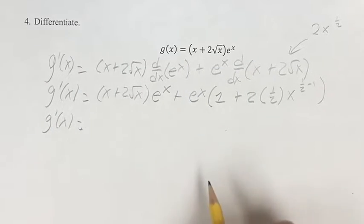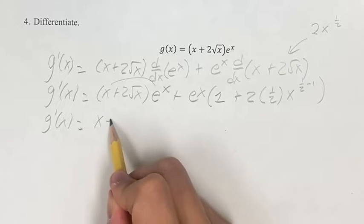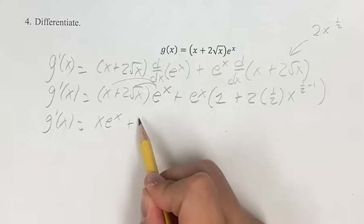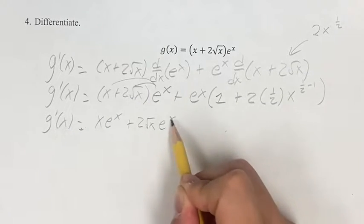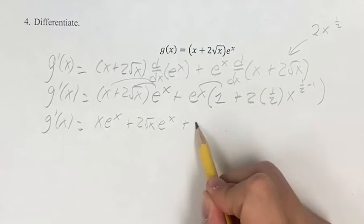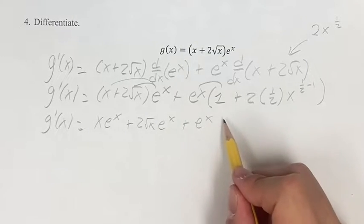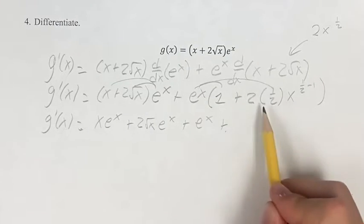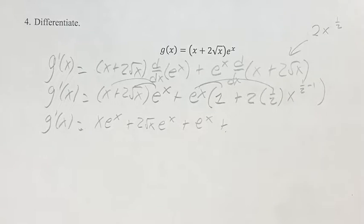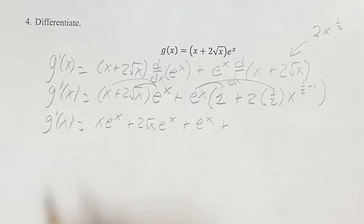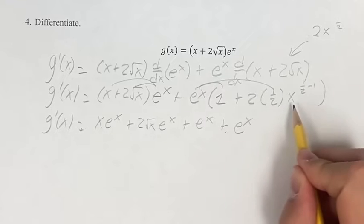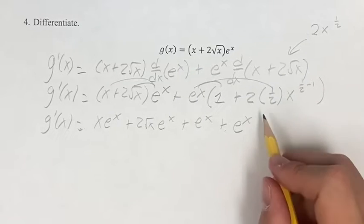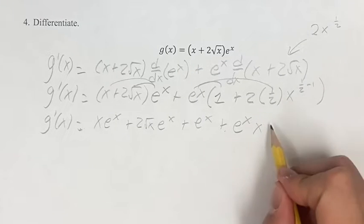Simplifying this, we get x e to the x, plus 2 root x e to the x, plus e to the x, plus 2 times 1 half is 1, 1 times e to the x is e to the x, so e to the x times x to the 1 half minus 1, which is negative 1 half.